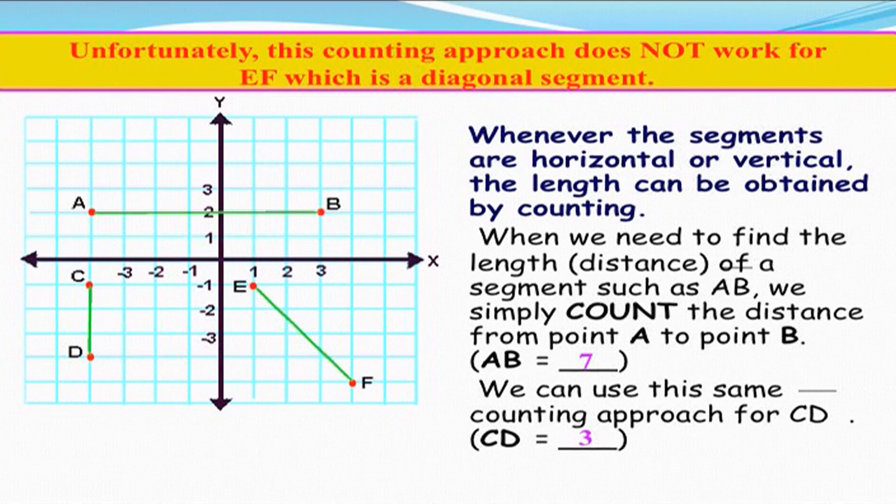We can use this same counting approach for CD, which we found as three. But unfortunately, this counting approach does not work for EF, which is a diagonal segment.